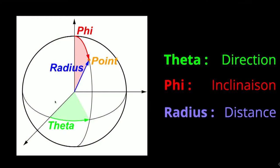And finally, the third value is the distance between me and the point. This is the radius. This means that if we have those three values, we can calculate the 3D coordinates of any point in space.